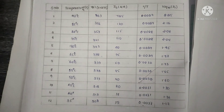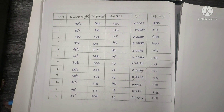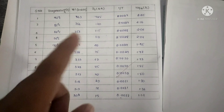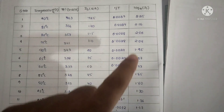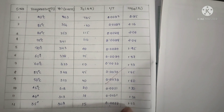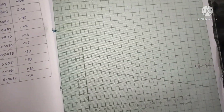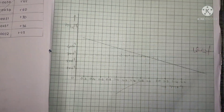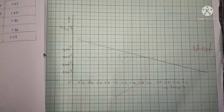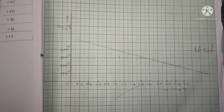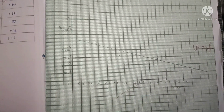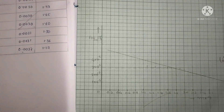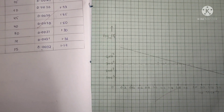In this experiment, we draw a graph between 1/T (in Kelvin) on the x-axis and log(Is) on the y-axis. The graph of log(Is) versus 1/T gives a negative slope linear curve. We need to calculate the slope of this curve by taking two different points. According to the formula, the energy gap Eg is equal to the magnitude of this slope divided by 5036. Using that formula, we calculate the energy gap of the semiconductor, and the obtained value is in electron volts.